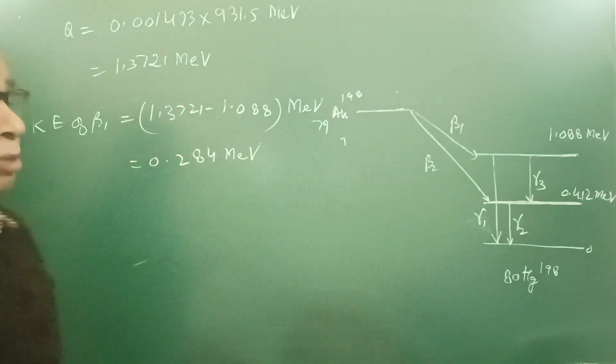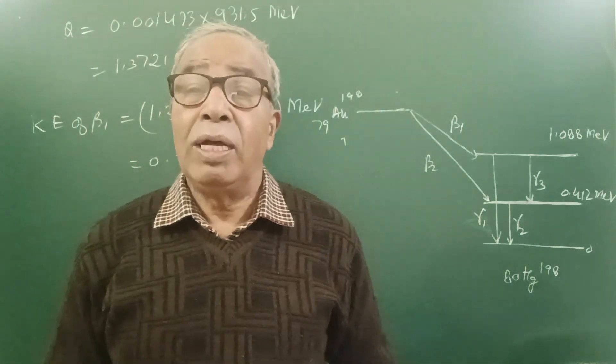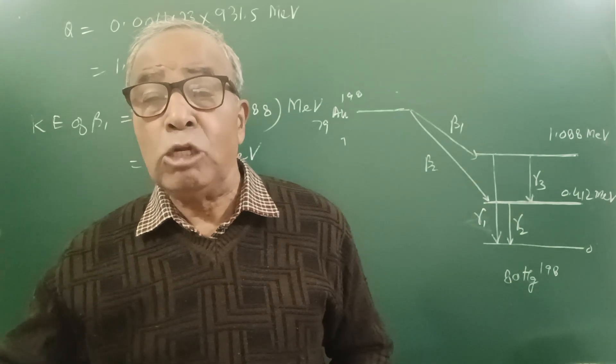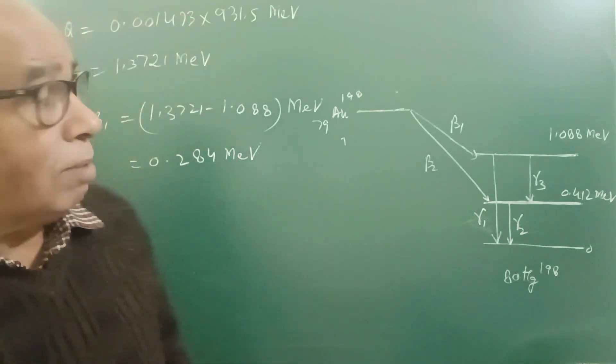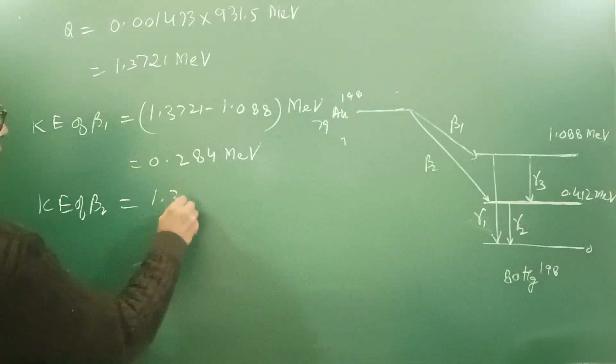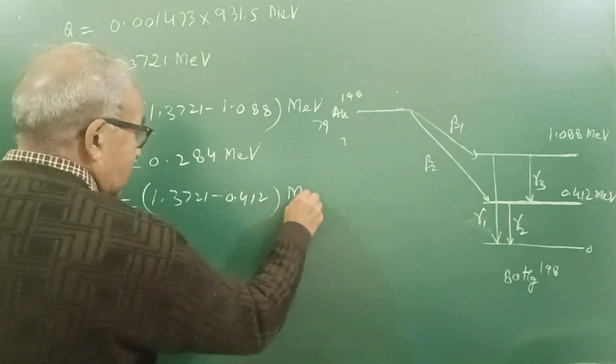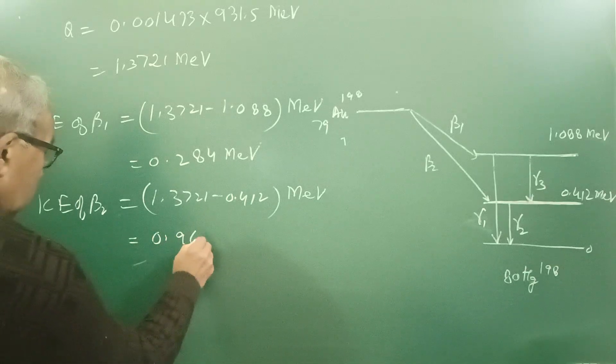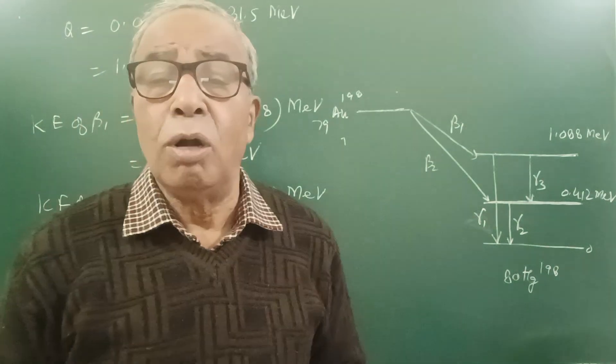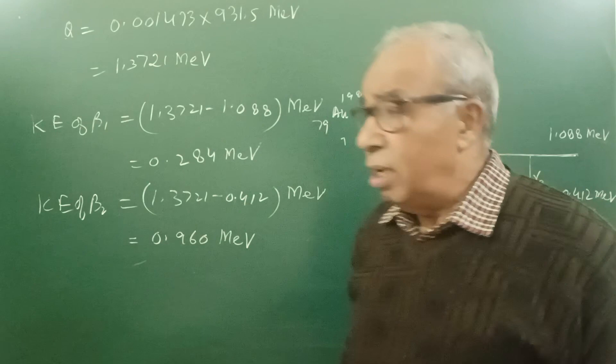The beauty of this question is to understand how beta emission takes place and then how gamma rays are emitted. When I ask some learning people how gamma rays are emitted, they are all unaware. We keep on telling the properties of alpha, beta, gamma, but we don't understand why the emission is taking place. Then kinetic energy of beta 2, that is 1.3721 minus 0.412 MeV, comes out to be 0.960 MeV.